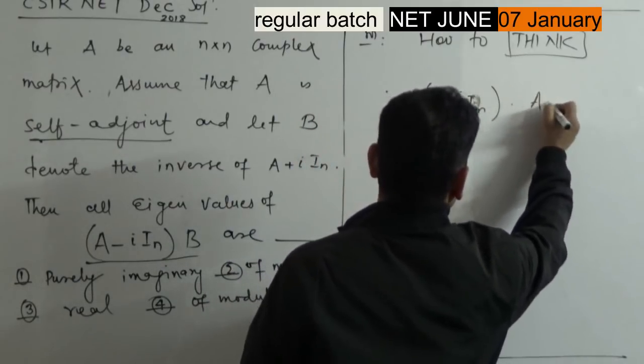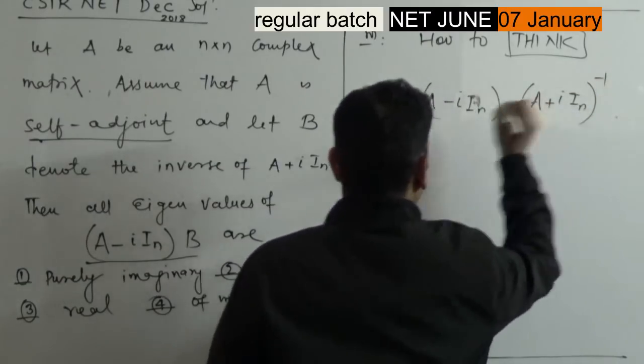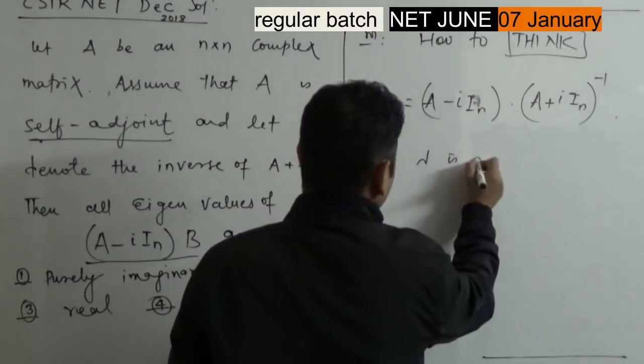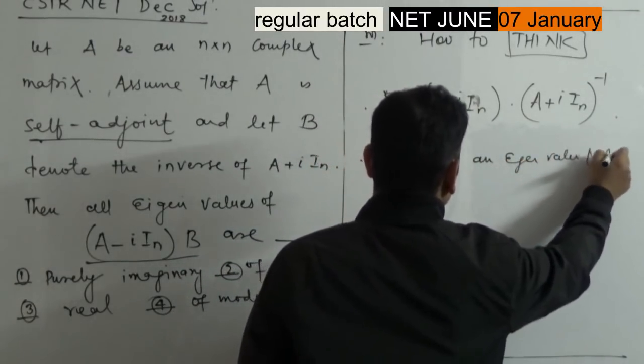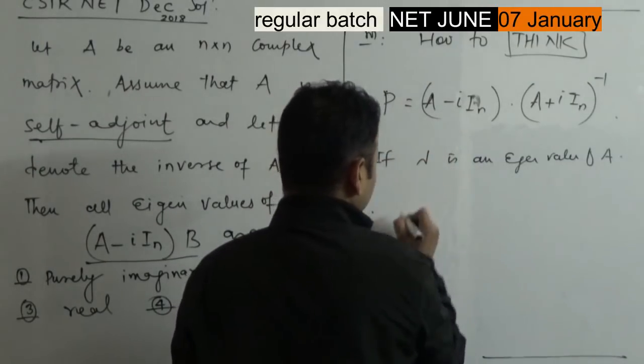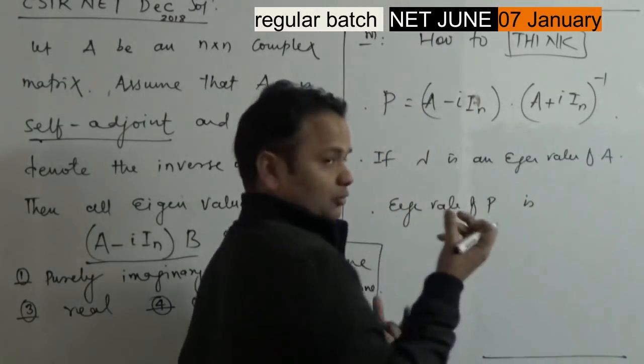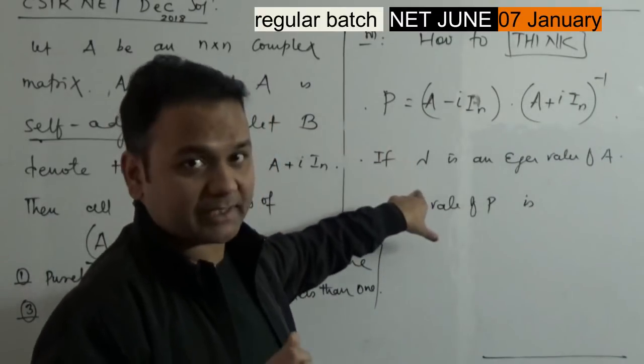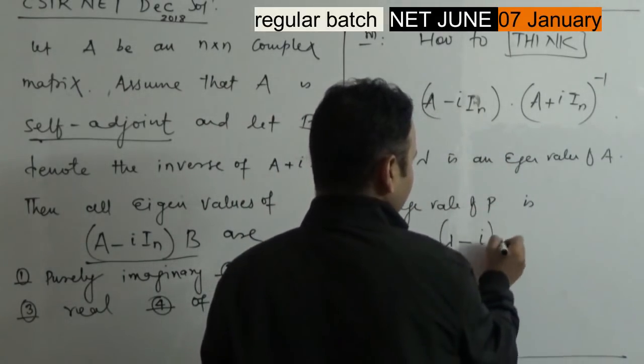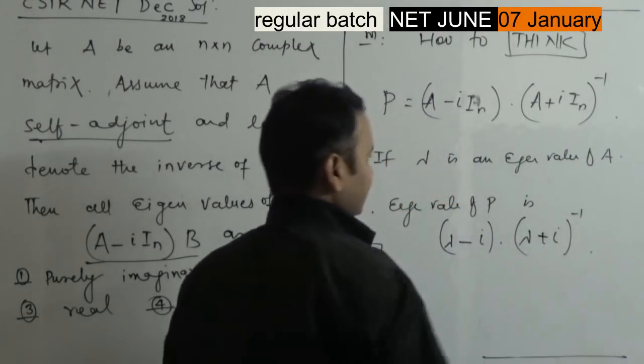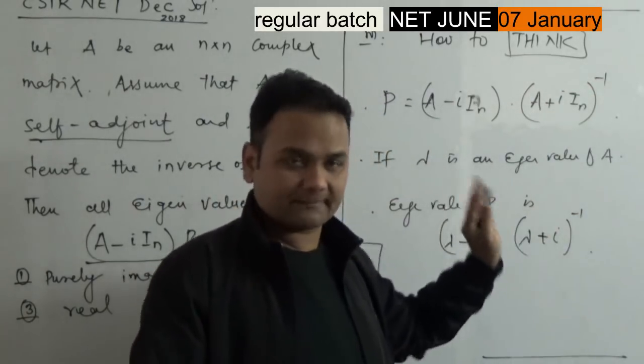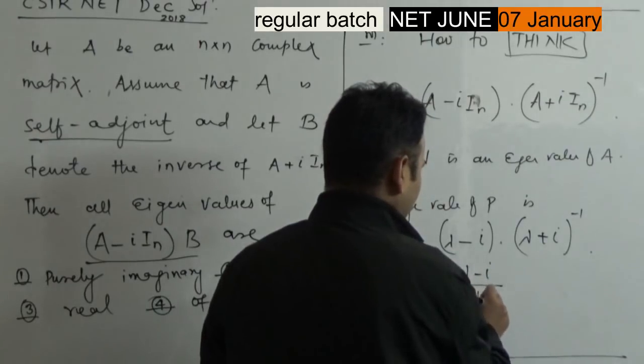Look, you are asking about the matrices. This is P, and B is (A plus iI_n) inverse. These are the matrices. If lambda is an eigenvalue of A, then the eigenvalue of P corresponding to lambda - lambda is eigenvalue of A, so the eigenvalue corresponding to lambda for this is lambda minus i for this, and 1 over (lambda plus i) for that. Because it is invertible, this eigenvalue is 1 over (lambda plus i).